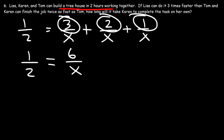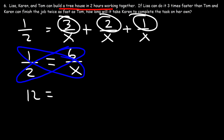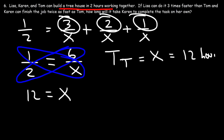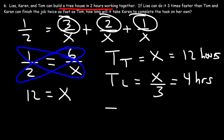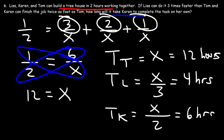Cross multiplying: 2 times 6 equals 12 and 1 times X equals X, so X equals 12. Tom's time is 12 hours. Lisa works 3 times faster, so Lisa's time is 12 divided by 3 equals 4 hours. Karen works twice as fast as Tom, so Karen's time is 12 divided by 2 equals 6 hours. Therefore the answer we're looking for is 6 hours for Karen to complete the task on her own.